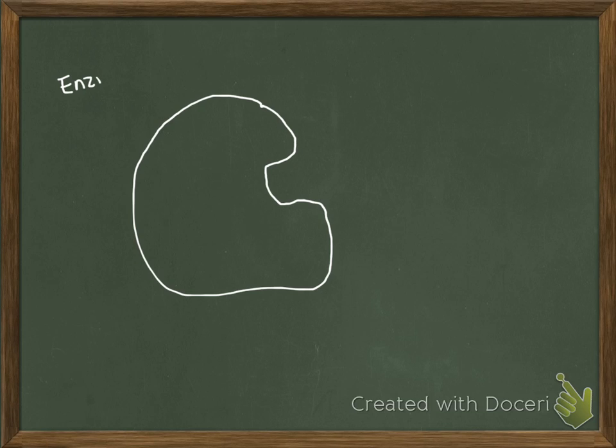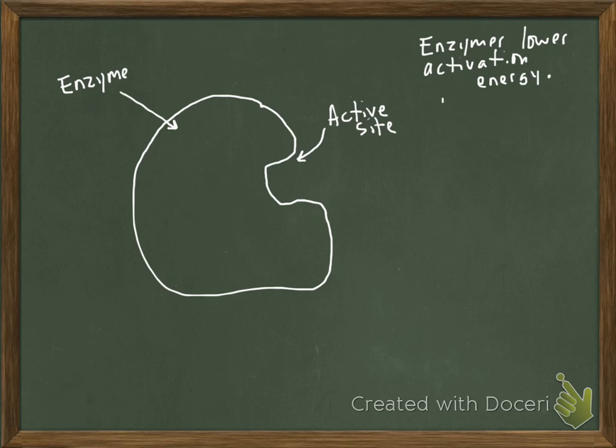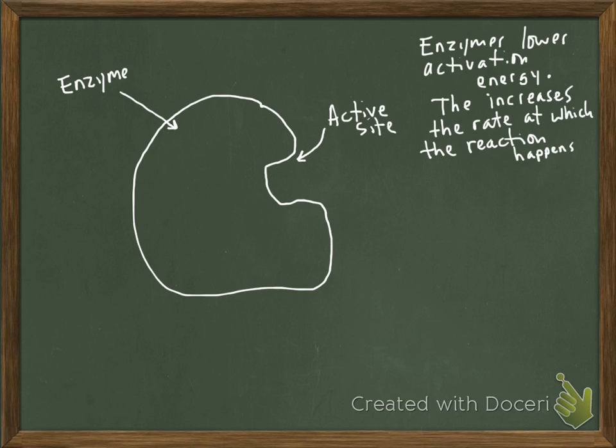So let's draw this enzyme again. And we're going to draw on the active site again, label that. And what we're going to talk about here, again, we understand that enzymes lower the activation energy. That means they lessen the amount of energy that's required to help a reaction begin. And when they lower this energy, making it easier for the reaction to happen, that's going to increase the rate at which the reaction happens.